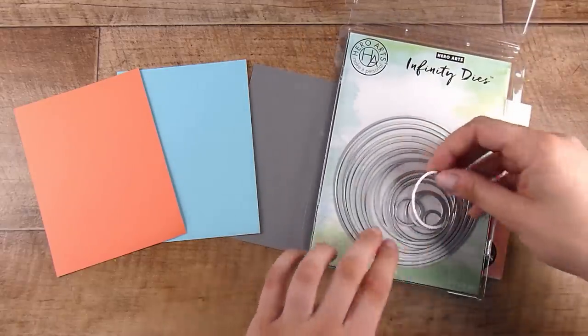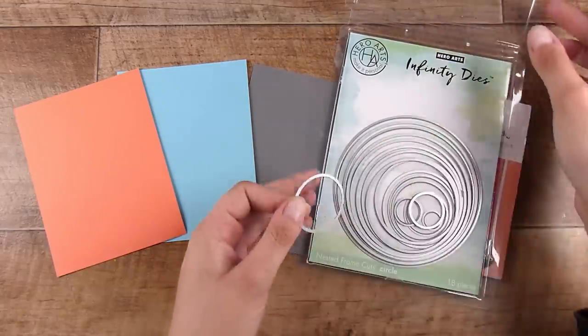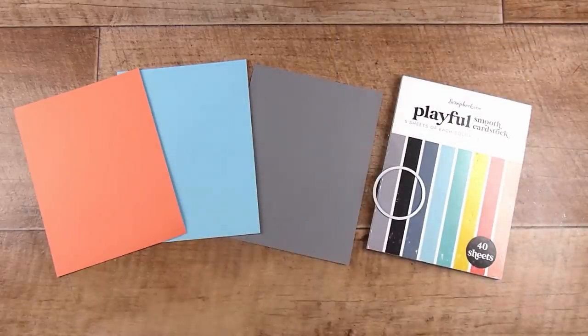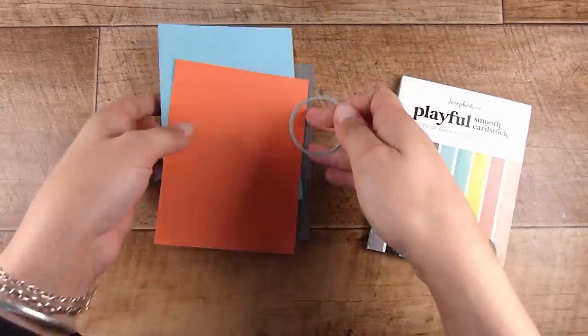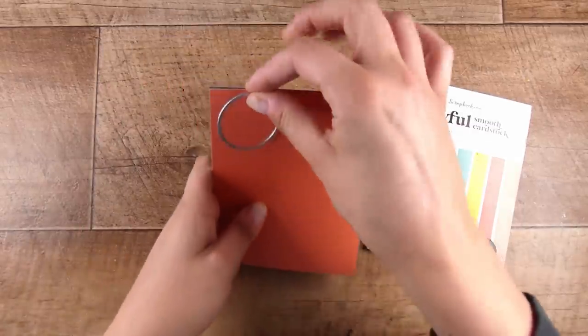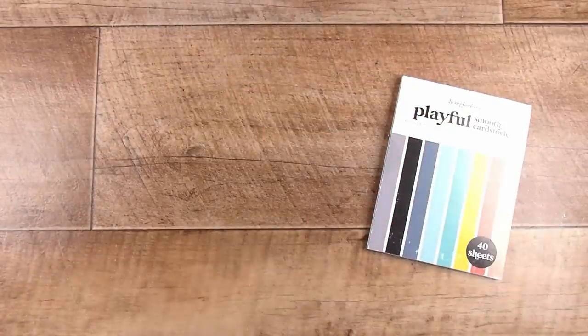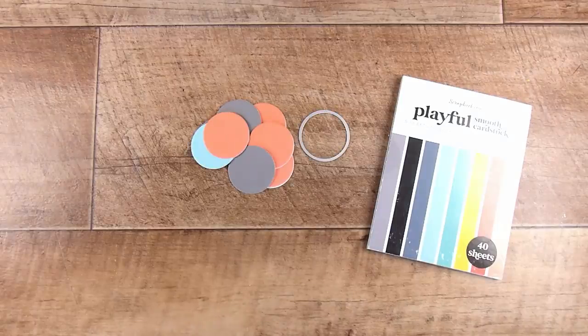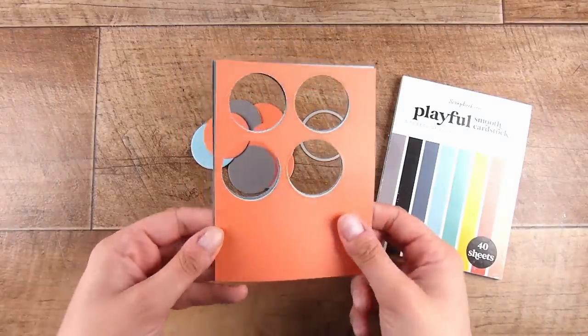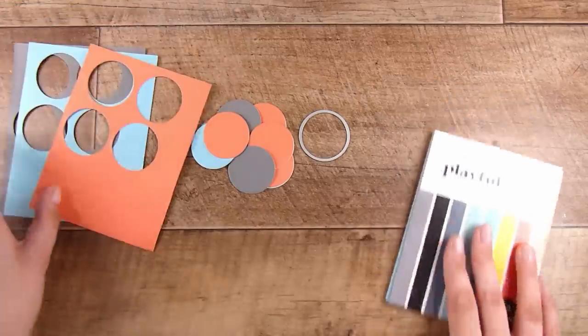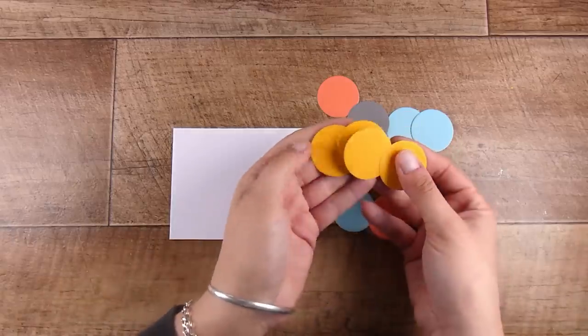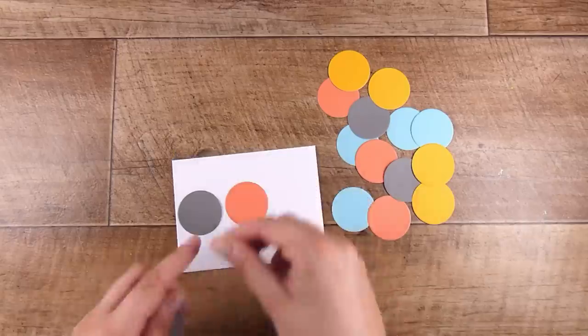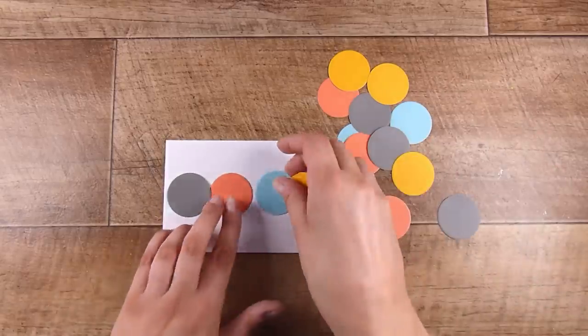The first one I started off with these three sheets of cardstock. These are from the Playful paper pad. I have the four and a quarter by five and a half inch one and that means that it's exactly a card front size. I took a circle die from the Hero Arts Infinity circle dies and I'm going to run all of these through at the same time. My die cutting machine cuts through all three layers and then I finally decided at the end that I actually wanted a yellow too. So, I have four different colors of circles.